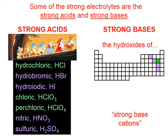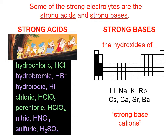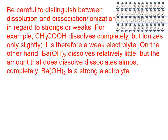Some strong bases are the hydroxides of what I call the strong base cations. These elements, when they form cations and combine with hydroxide ion, are the strong base cations. Notice that they form a lowercase 'b' on the periodic table — the b in base. So any of these combined with OH⁻ ion is going to be a strong base. I will refer to the strong base cations from now on as the SBCs.